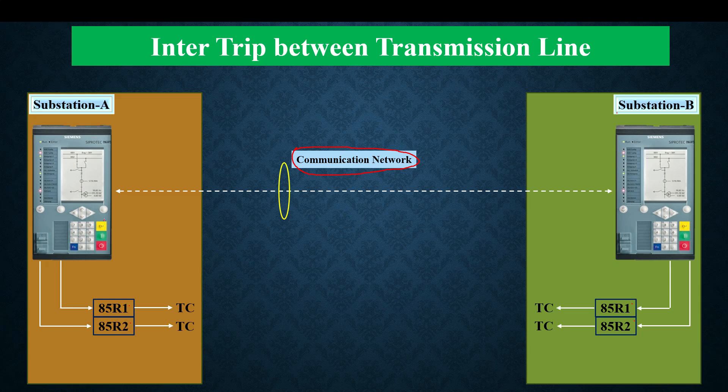For example, if single-phase differential protection operates it will go to 85R1, but if two-phase or three-phase differential protection operates it will operate 85R2. All this logic must be configured in the concerned protection relay — specifying which signal will operate 85R1 and which will operate 85R2.